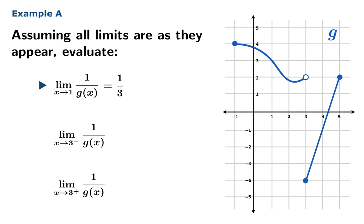The limiting value of g as x approaches 3 does not exist — it's different from the left and the right. However, these principles still apply when you approach from one side. Since the limiting value of g as x approaches 3 from the left is 2, the limiting value of the reciprocal will be 1 half. And since the limiting value of g from the right at 3 appears to be negative 4, the limit of the reciprocal as x approaches 3 from the right is negative 1 quarter.